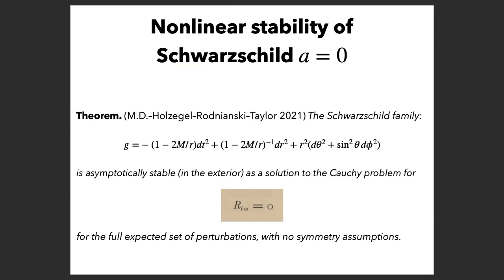Let me review the sub-extremal stability story. Starting with the non-linear stability of Schwarzschild: this is a theorem from a few years back, joint with Holzegel, Rodnianski, and Taylor. The theorem is simply that the Schwarzschild family, as a special case when a = 0, is asymptotically stable as a solution for the vacuum equations in the exterior of the black hole for the full expected set of perturbations with no symmetry assumptions.